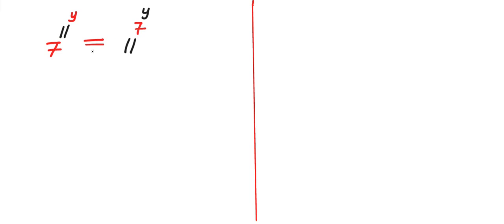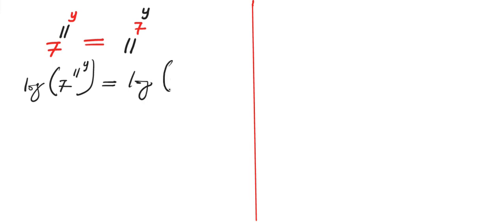So without wasting much time, let's get started. In order to solve this exponential equation, the first step is to take the log of both sides. So we have log of 7 to the power of 11^y equals to log of 11 to the power of 7^y.